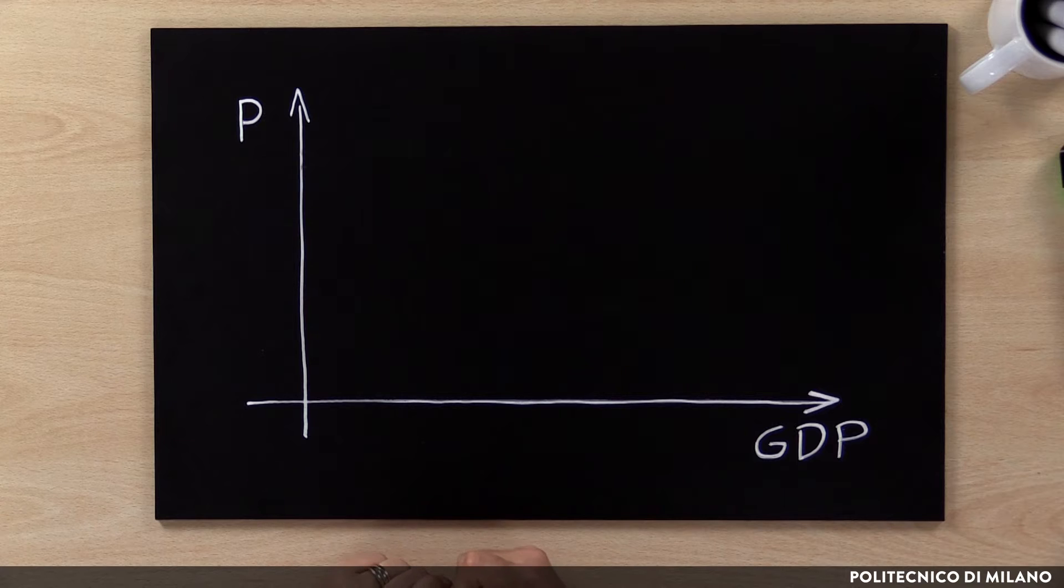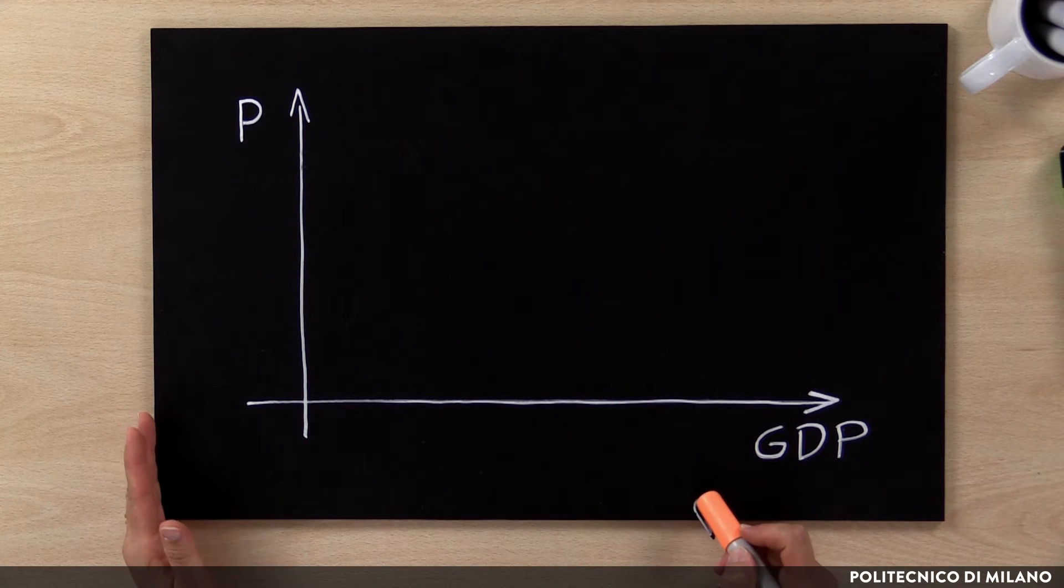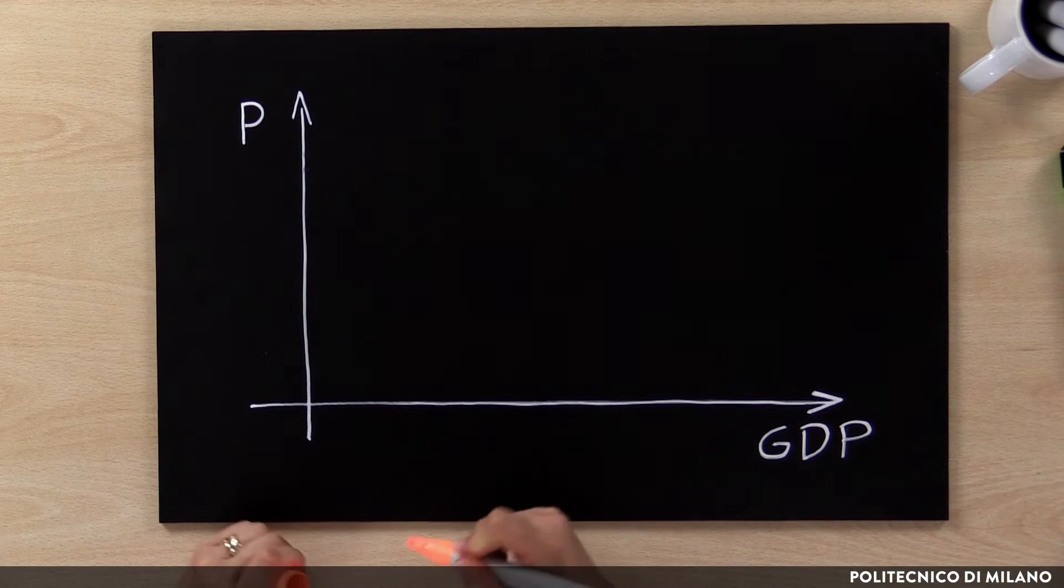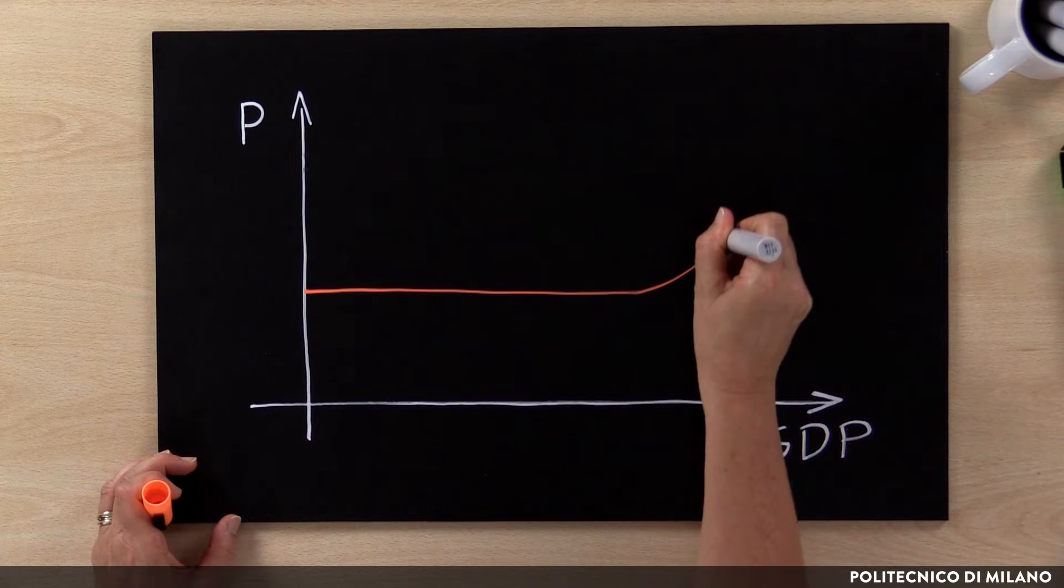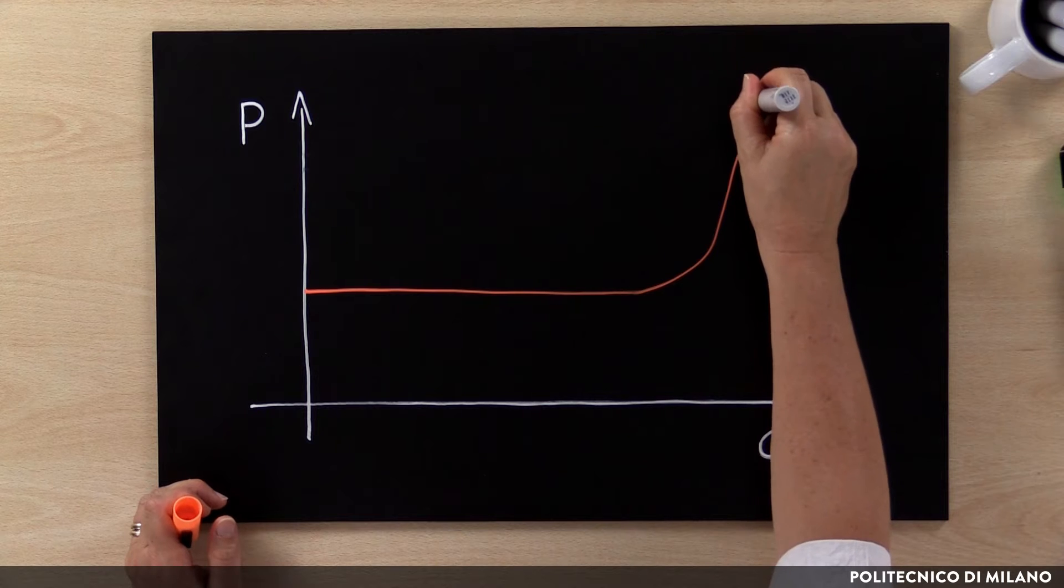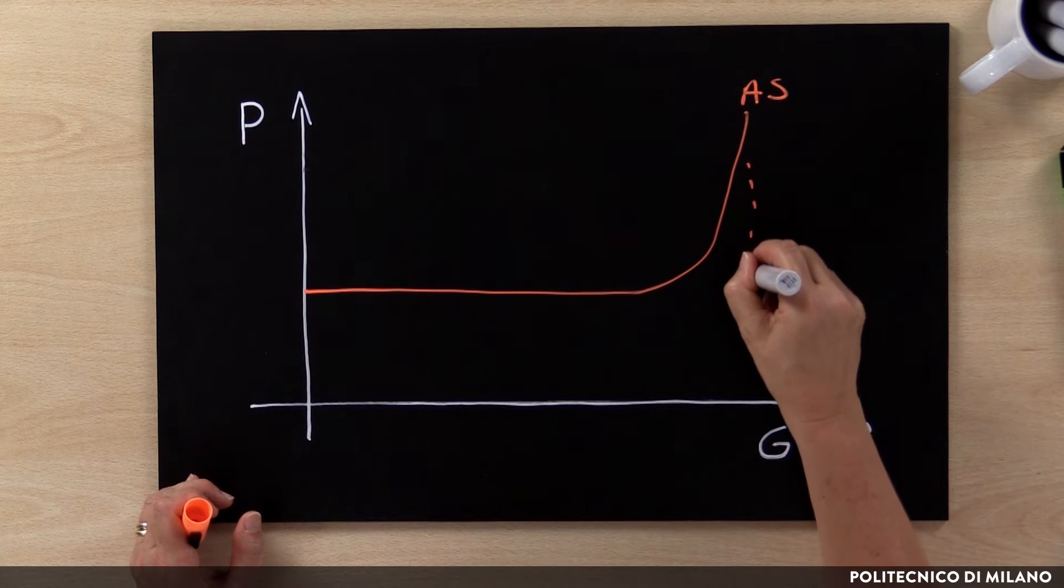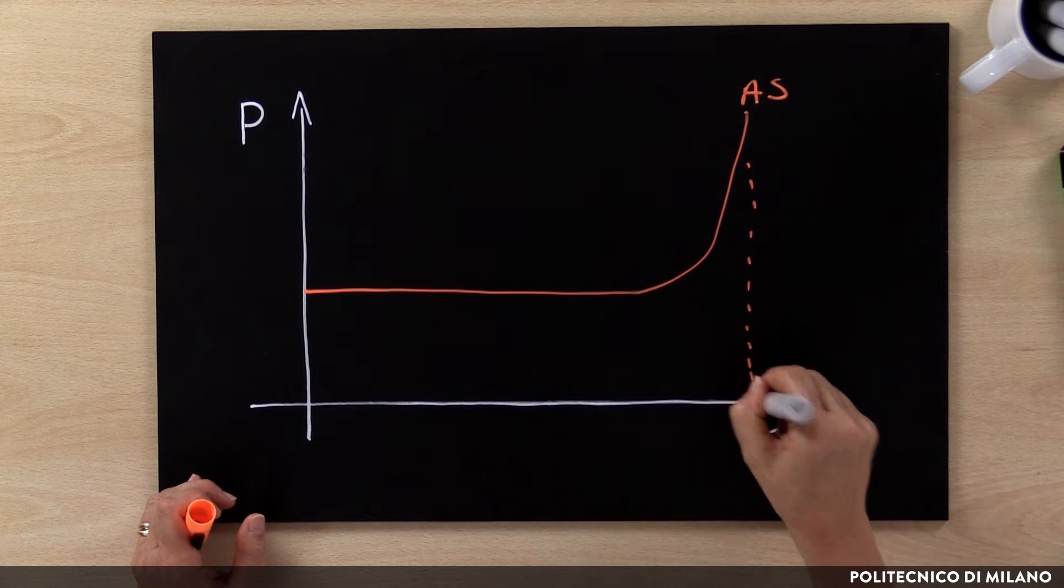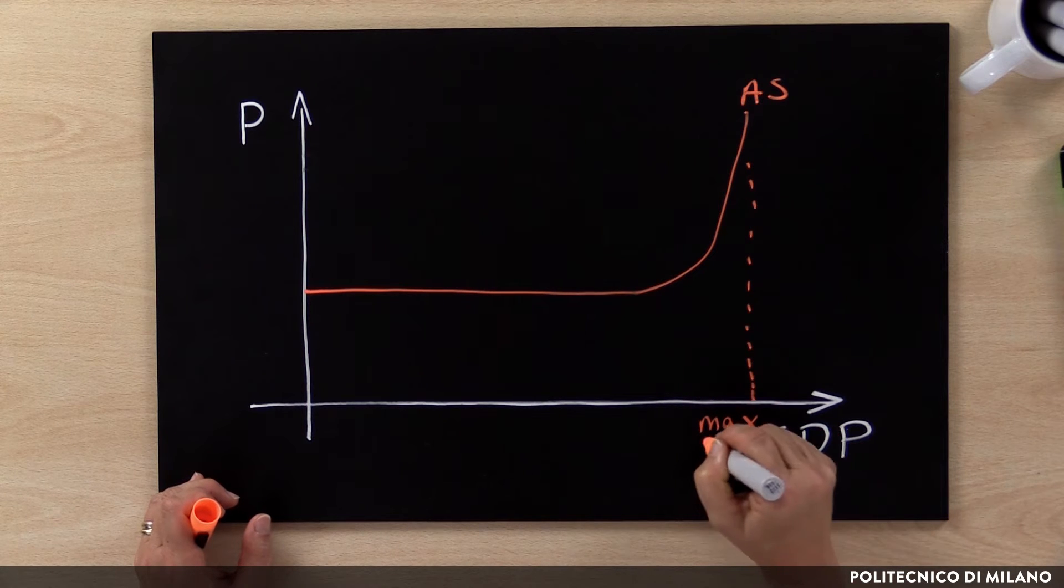In this model we assume that we can draw aggregate supply in a graph represented by an axis system where we have GDP and the price level. And we assume that aggregate supply can be drawn as a flat line increasing and becoming steeper as we reach the level of GDP corresponding to the maximum level of GDP in the short-run.